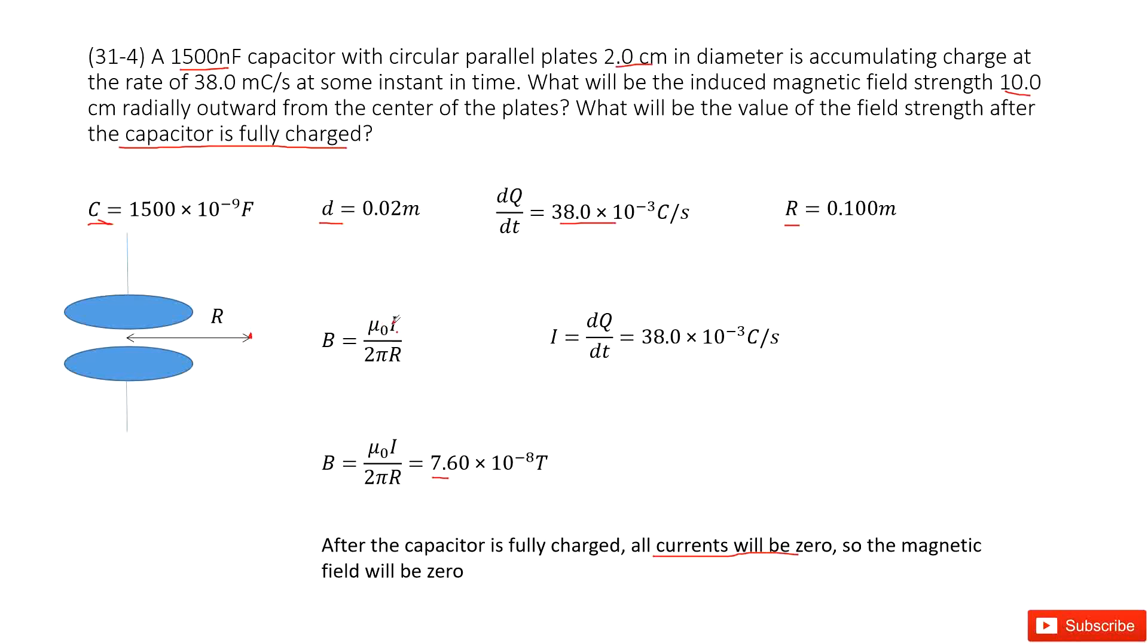Because magnetic field is mu naught i over 2 pi r. If i is 0, so B becomes 0. Thank you.